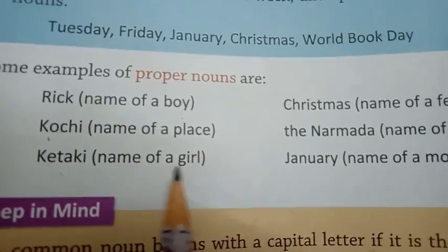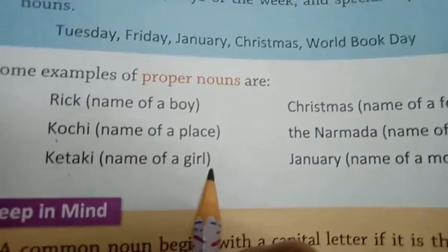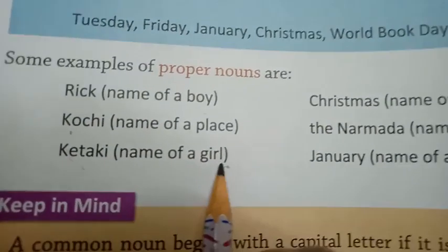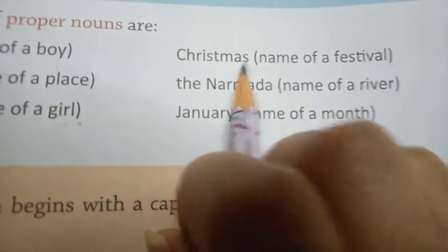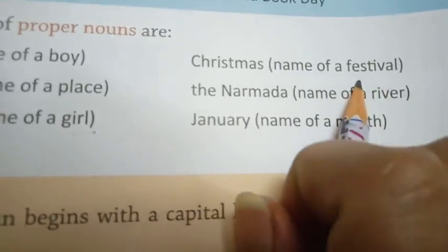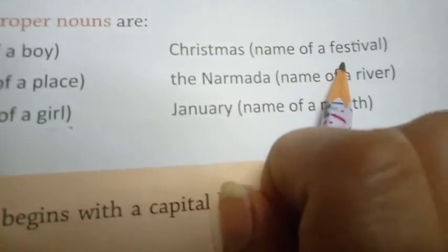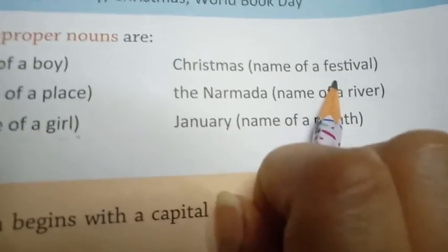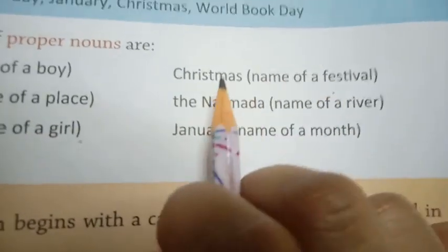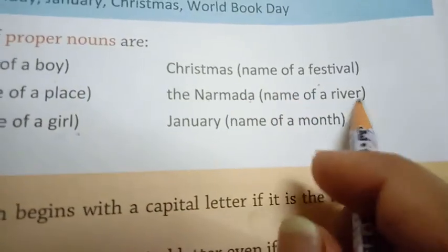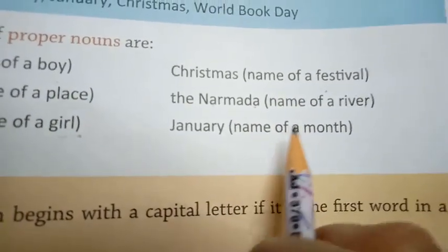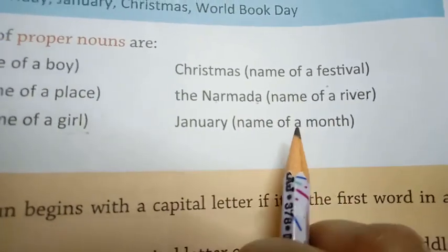Ketki — Ketki is a name of a girl, so it is a proper noun. Christmas — Christmas is a name of a festival, that's why we call it a proper noun. The Narmada — Narmada is a name of a river. January — January is a name of a month. These are all proper nouns.